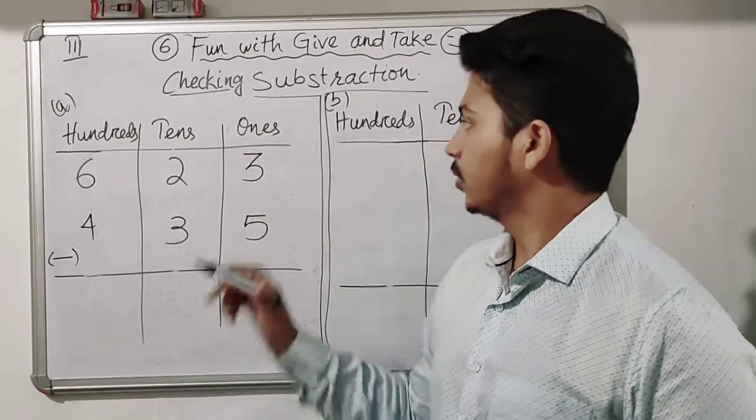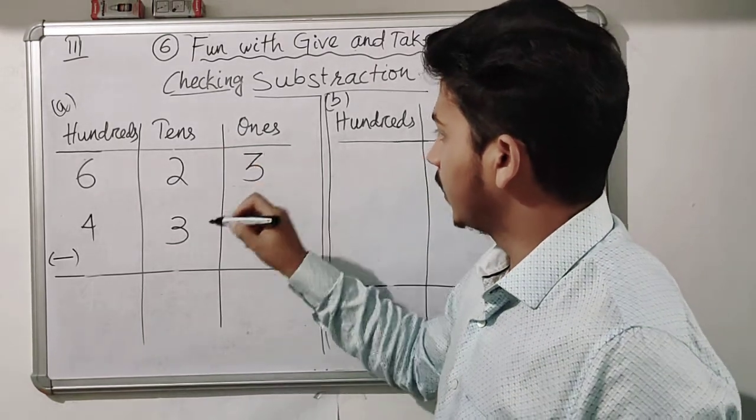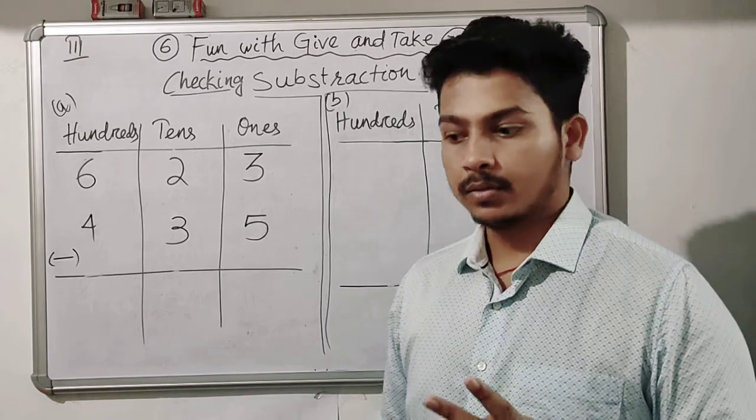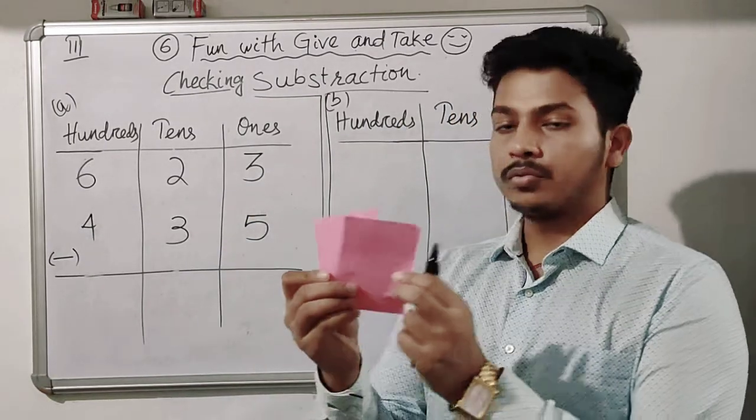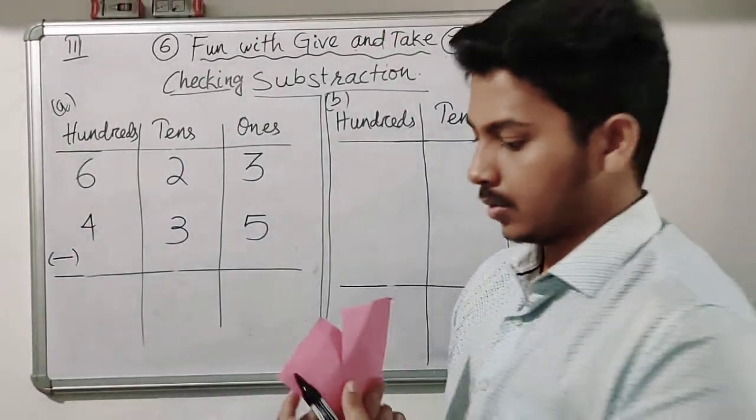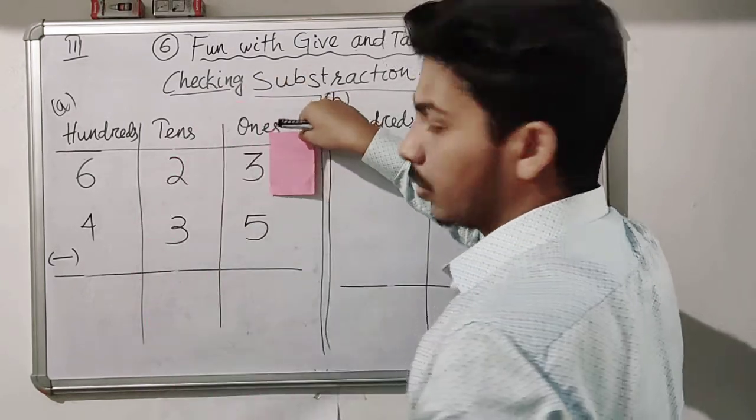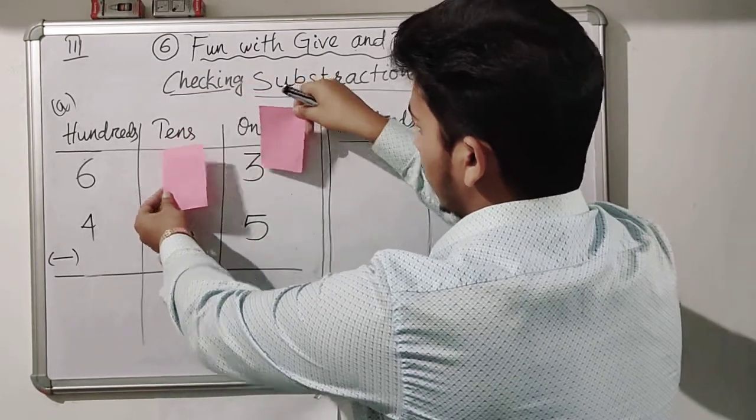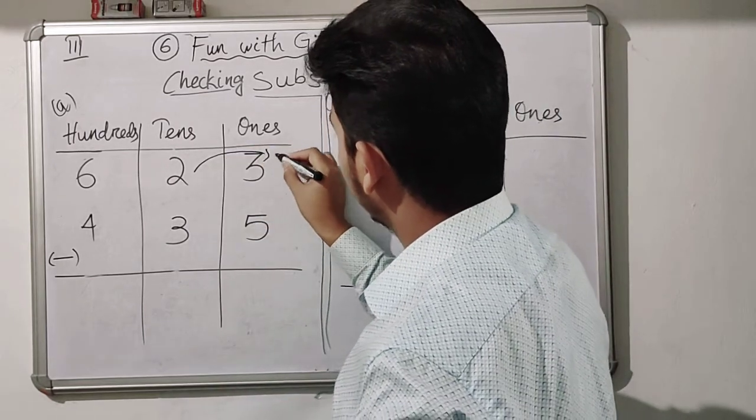Then what will we do? Yes, we will put a carry here. Here it is two tens. One tens will go here to the ones place. So one tens will go here.